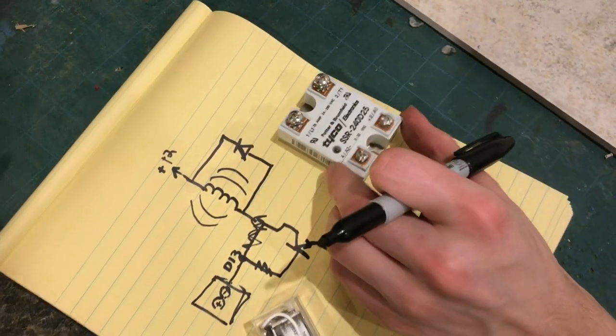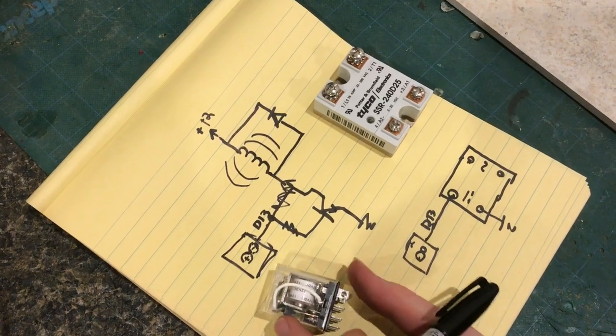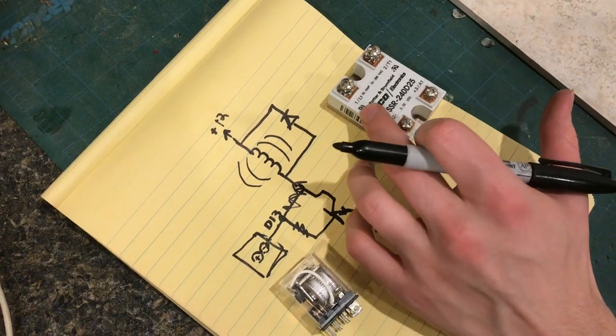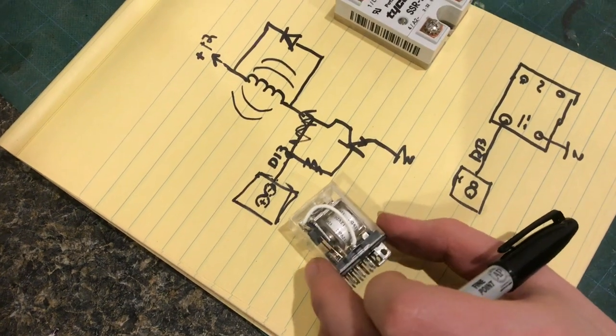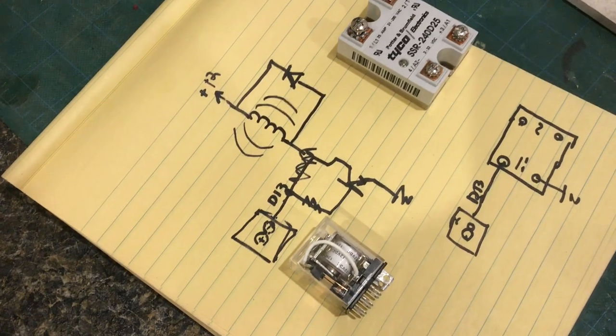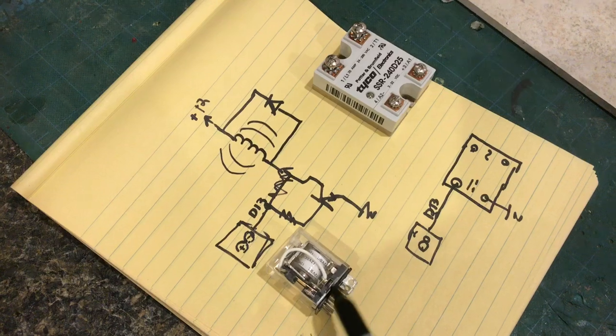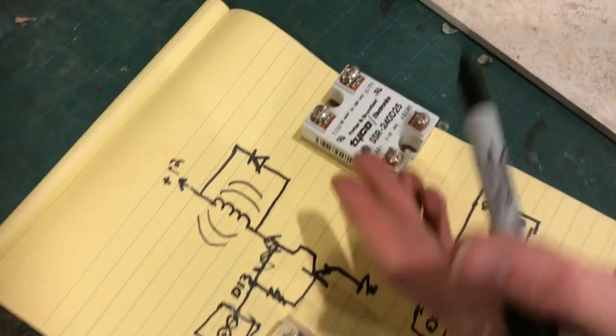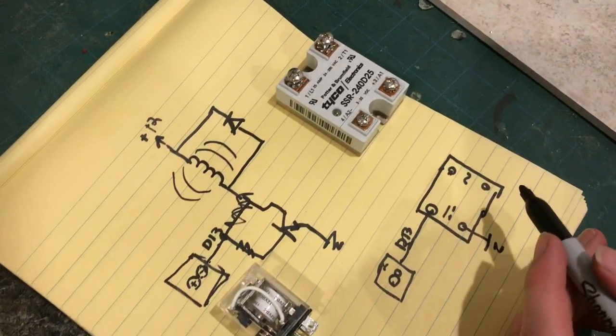Also these don't make the noise that a relay makes because there's no mechanical mechanism inside here. It also means you can turn this relay on and off much much faster than you can turn this relay on and off. One because there's a limit to how quickly this can move but two you'll wear out the mechanism by actuating it too rapidly. Whereas with this you know a thousand times per second you could turn it on and off perhaps and it won't care.